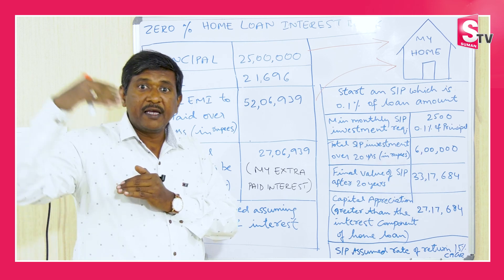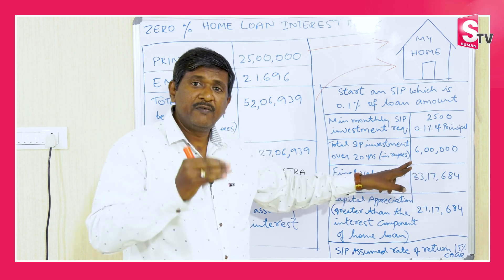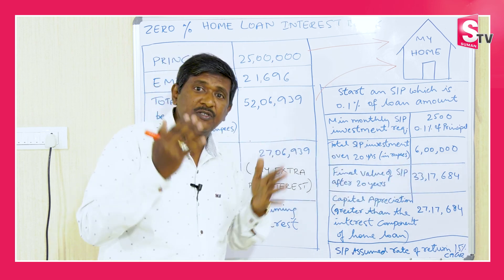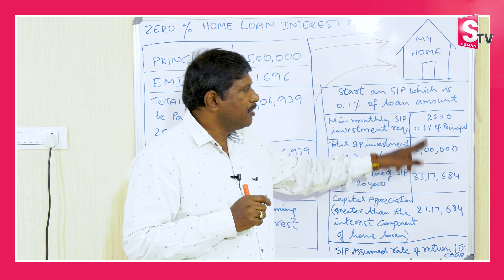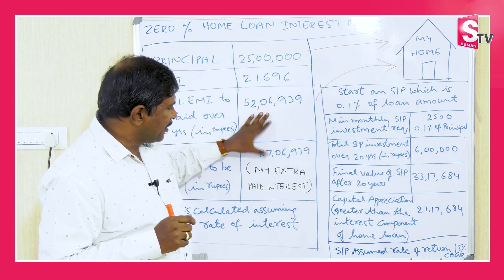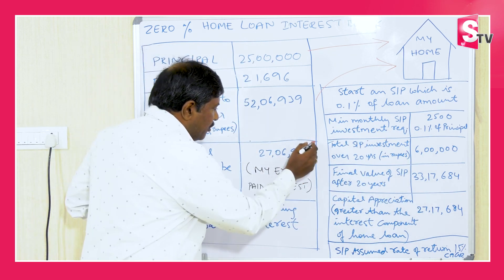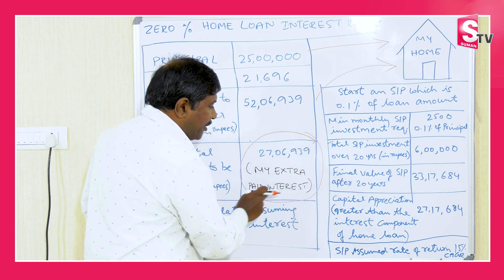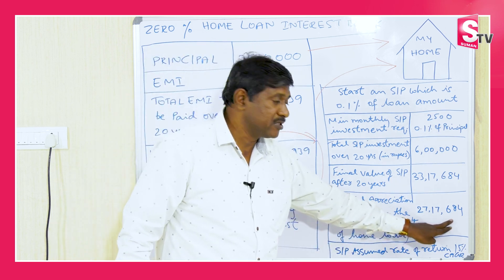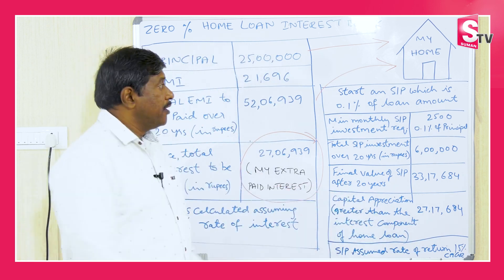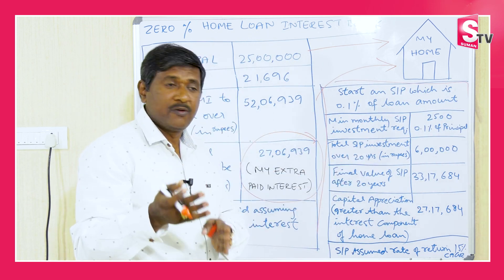You have to build that fund value for 15 years. At least 12% CAGR return, and this amount is achievable. The concept: whatever interest you are paying — 27 lakhs, 6,933 — you are getting that back through the extra paid interest returns from the mutual fund. This is your income. If you invest properly in fund value, this becomes your income.